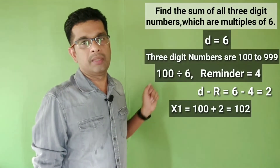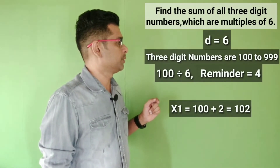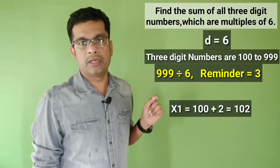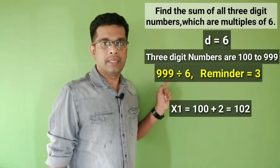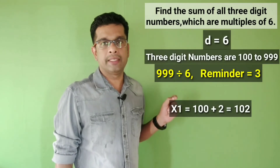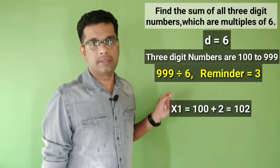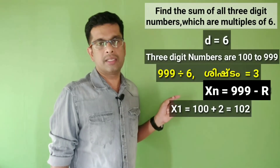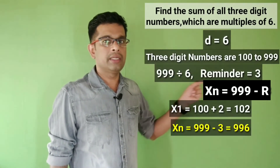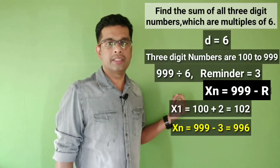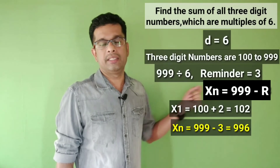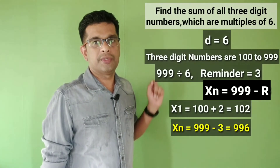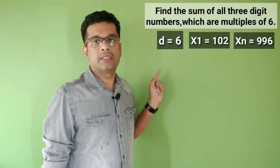This is the first term. The last term: 999 divided by 6 gives a remainder of 3. So the last term is 999 minus 3, which equals 996. The last term, xn, is 996.